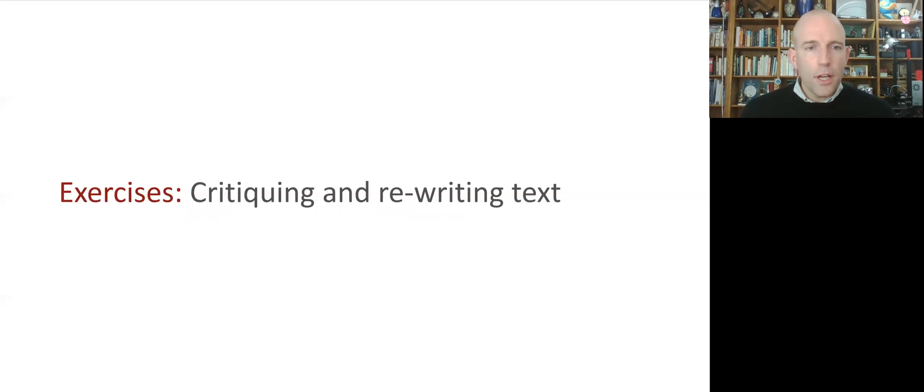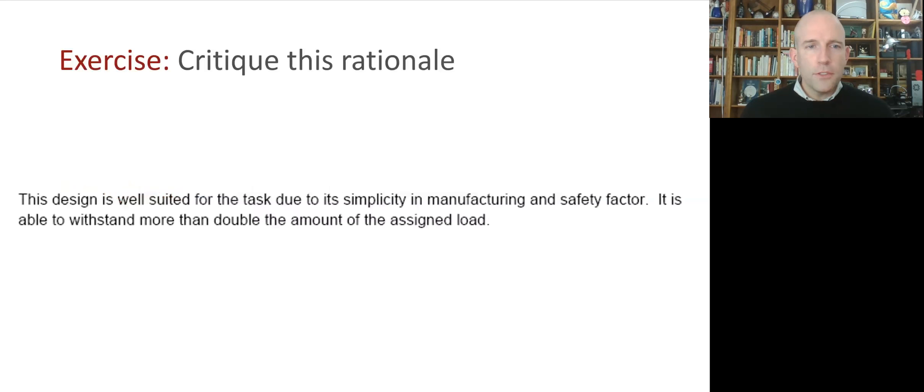All right, so now we're going to do a couple of quick writing exercises. So, get your paper and pencil and a friend to talk this over with. Here's the first one. What we're going to do is read this rationale from a design report and critique it. What could be improved? What's good about it? What would you do differently? Take about two minutes to read this, think about that, and discuss it with your partner, and then come back. So, press pause now.